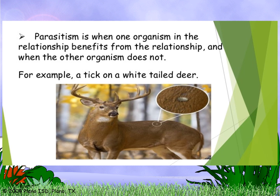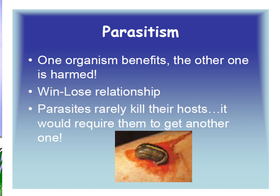Parasitism is when one organism benefits from the relationship and the other does not. For example, a tick and a white-tailed deer. There are two types of parasitism: endoparasites and ectoparasites. If the parasite is on the outside of the body, it is called an ectoparasite. If the parasite is inside the animal, it is called an endoparasite. An example is the leech on the skin of the human body.